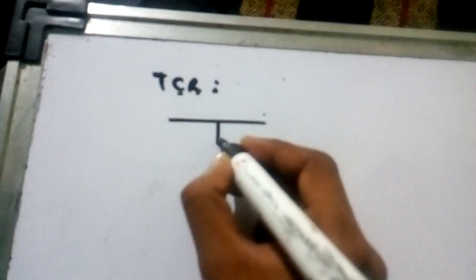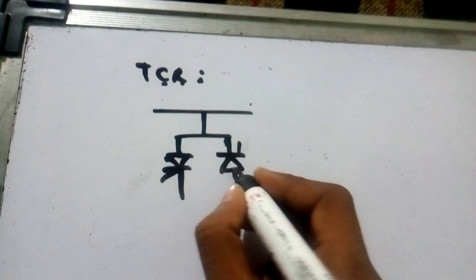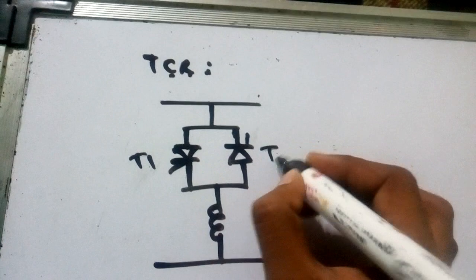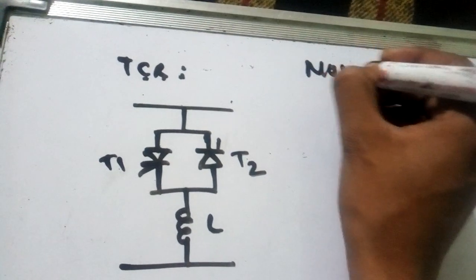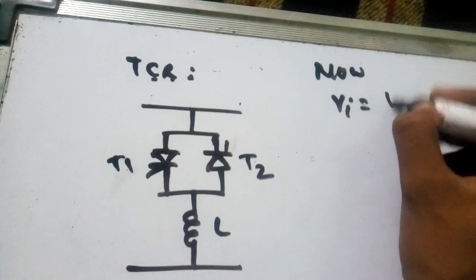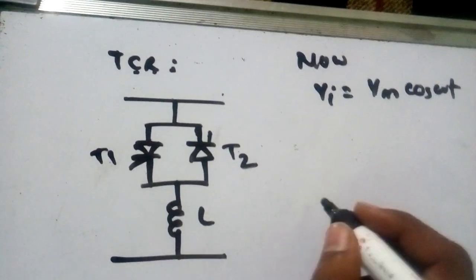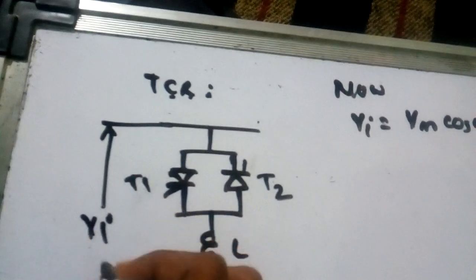TCR thyristor controlled reactor - its diagram is a thyristor and then reactor. There are two thyristors T1 and T2. Vm is the voltage applied across this reactor.